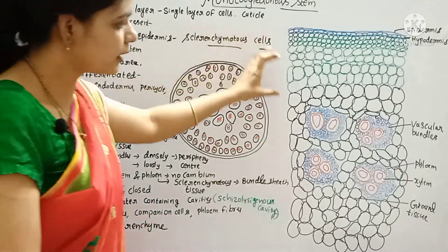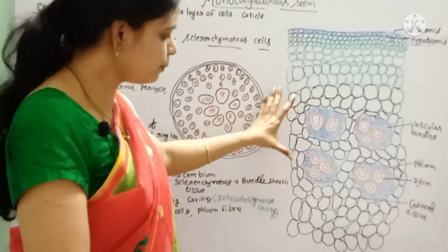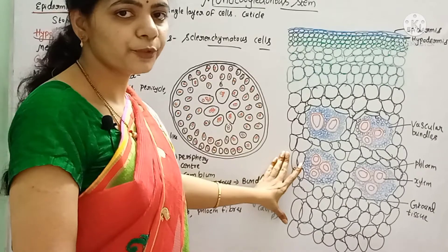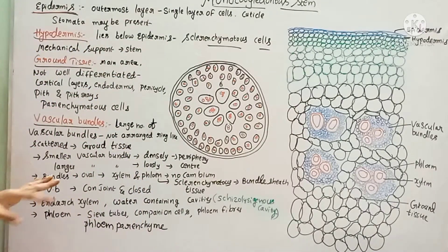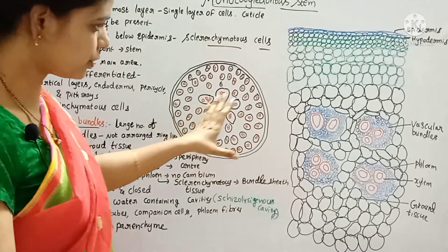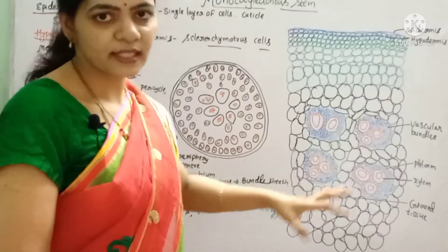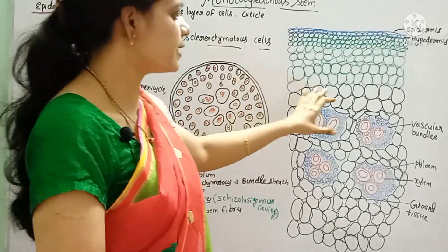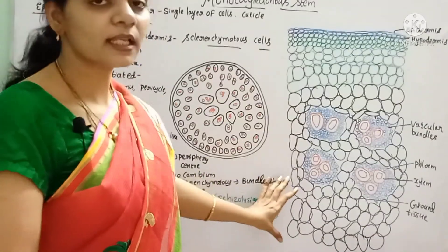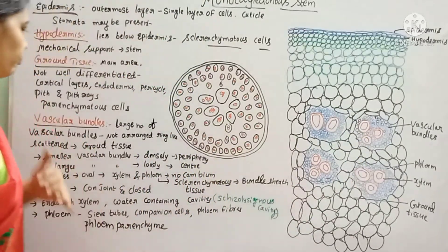Next is the ground tissue. In the monocot stem, the ground tissue occupies the major part of the stem. There is no differentiation into cortex, endodermis, pericycle, and pith as in dicot stem — only ground tissue. The ground tissue is composed of parenchyma cells, loosely arranged thin-walled parenchyma cells with large intercellular spaces. Vascular bundles are scattered throughout this ground tissue.